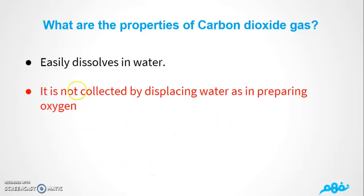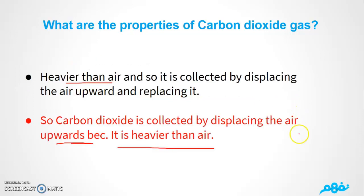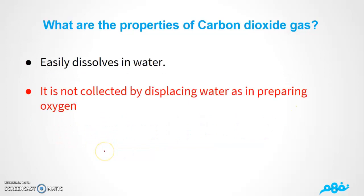The next property: carbon dioxide easily dissolves in water. An important point here — it is NOT collected by displacing water, unlike oxygen. It causes the air to be displaced upward, but it cannot be collected over water because carbon dioxide easily dissolves in water.